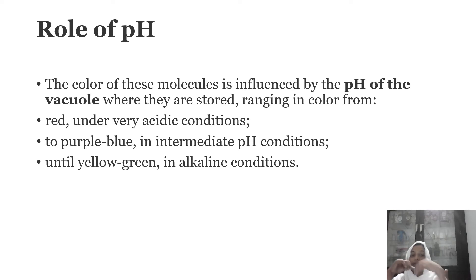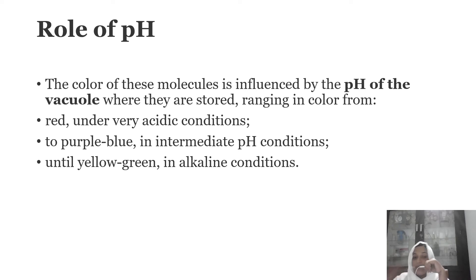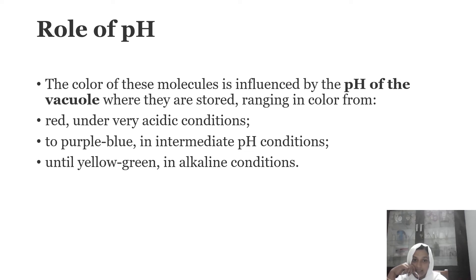For example, red color appears under very acidic conditions. Purple and blue appear at intermediate pH conditions. Alkaline conditions give yellow color. The color depends on pH, as this molecule is amphoteric in nature — it behaves as an acid or base. The acidic form gives the corresponding salt and color.